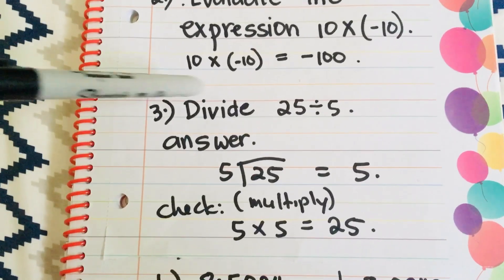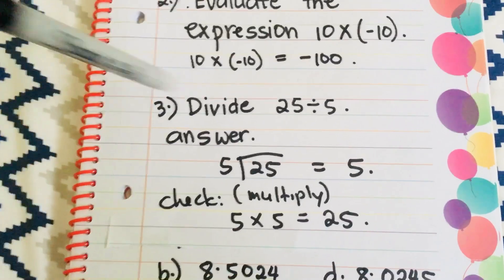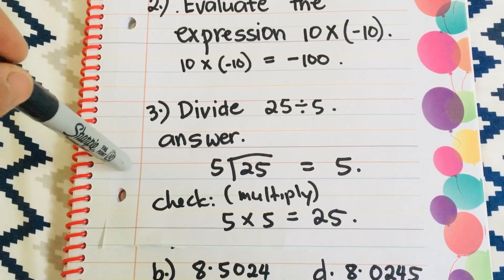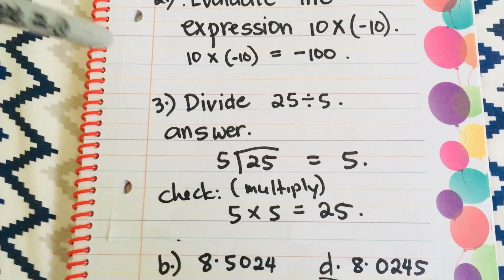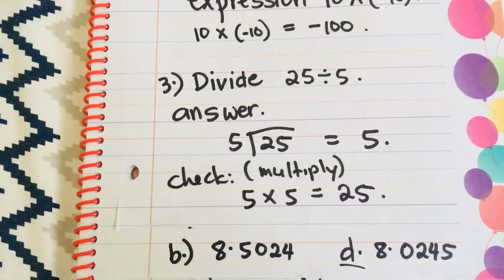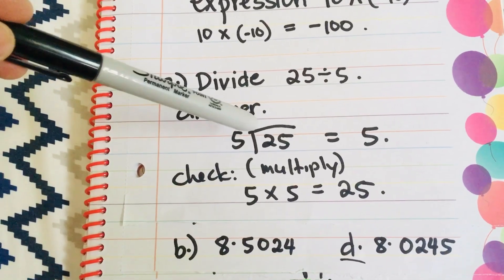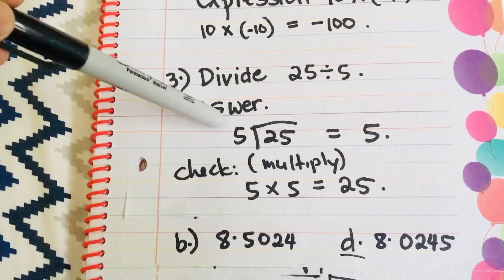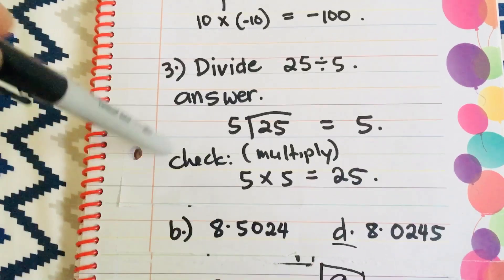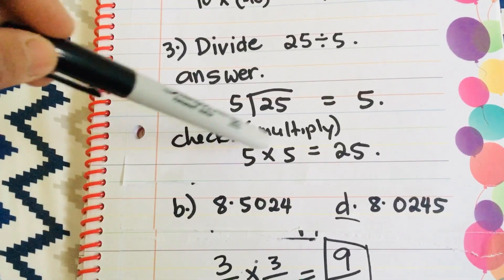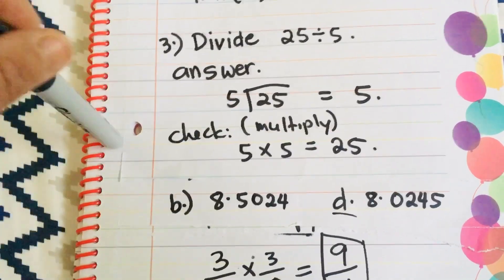Then, number 3, divide 25 by 5. So, this is very easy. Sometimes, like the TEAS exam, the questions are really easy. You just have to be very quick and vigilant. So, 25 divided by 5 is 5. When you check if the answer is correct, you just have to multiply it. 5 times 5 equals 25.